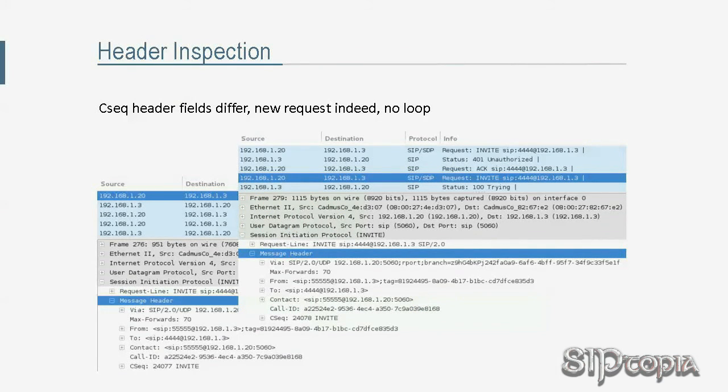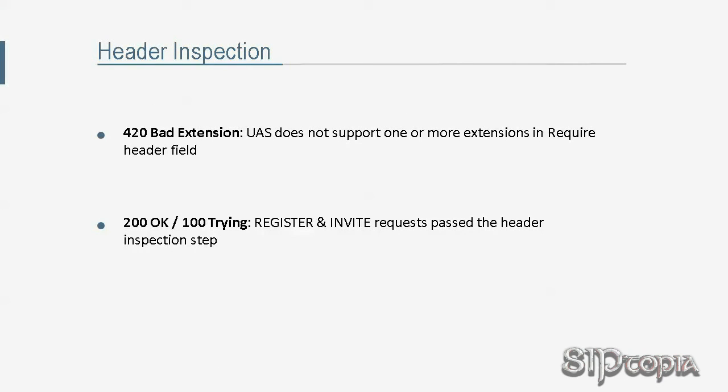The Require header field also gets special attention during header inspection. If the UAS receives a request with a Require header field listing one or more extensions and supports them all, processing moves on. If, however, the UAS does not support one or more extensions listed in the Require header field, it responds with 420 Bad Extension, which includes an Unsupported header field listing the extensions from the Require header field that it doesn't support.